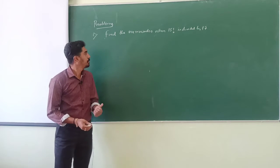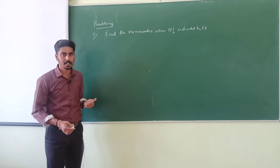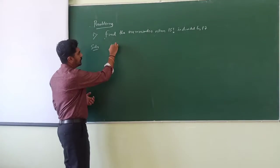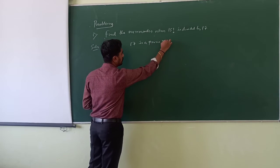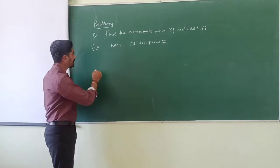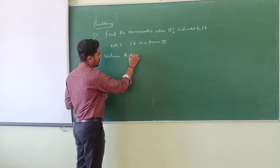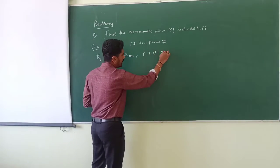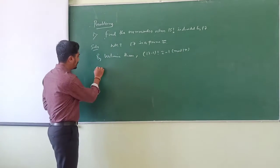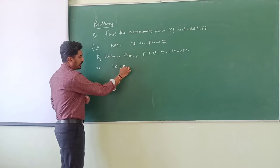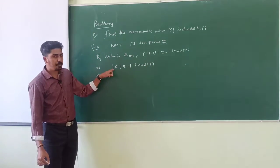Now let us consider some problems. First problem: find the remainder when 15! is divided by 17. Since 17 is a prime number, by Wilson's theorem, (17 minus 1)! = 16! ≡ minus 1 (mod 17). We expand this factorial to isolate 15!.